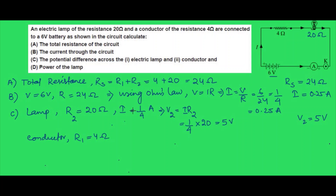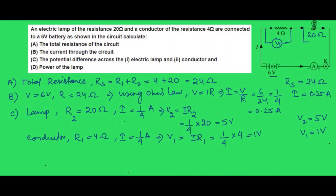For the conductor, resistance R1 is 4 ohm and the current flowing is 1/4 ampere. So V1 = I × R1 = (1/4) × 4 = 1 volt. So the potential difference across the conductor V1 is 1 volt.